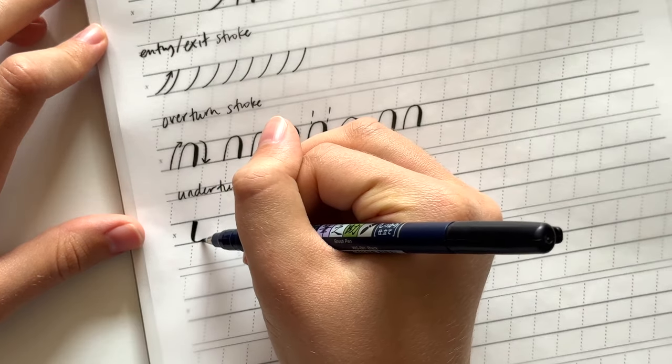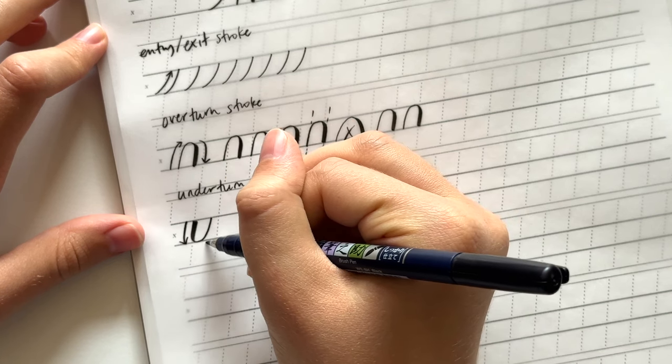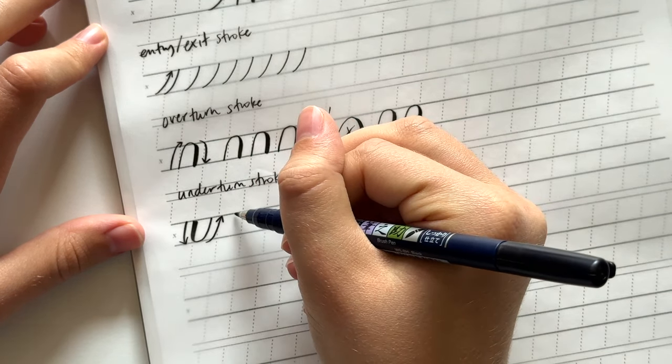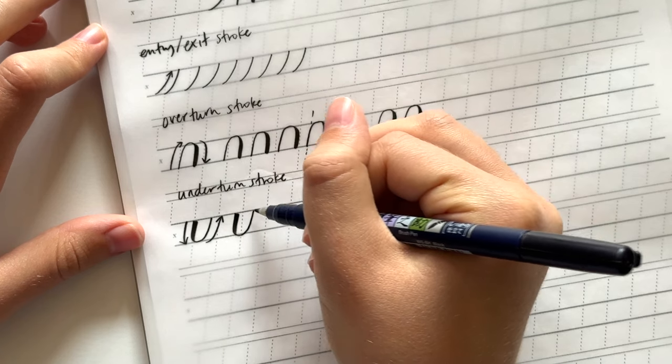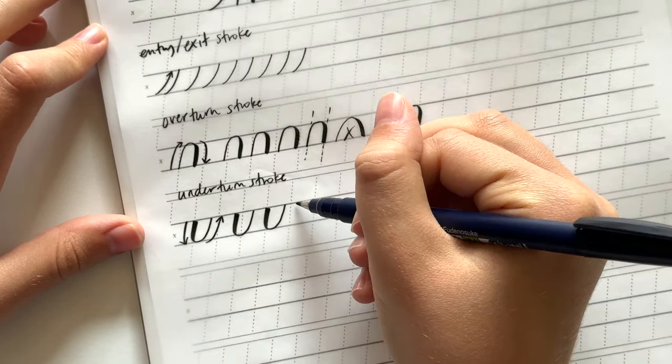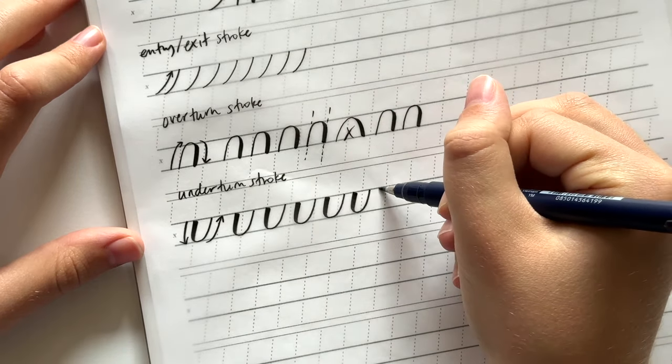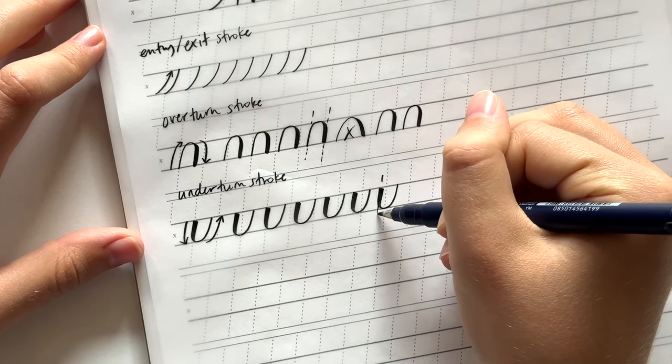The third basic stroke is the underturn stroke and this is just a U-shape, so a reverse of the one we just did. We start coming down on the left side with heavy pressure and then turn and come back up light. And once again we want to keep those two sides of this stroke parallel.